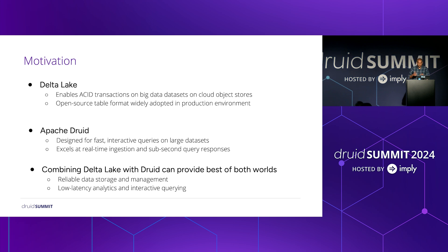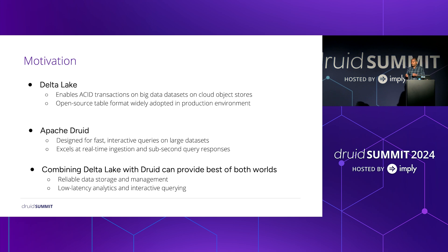Just a brief introduction about Delta Lake. Delta Lake is a table format. It enables ACID transactions on large datasets that are in cloud object stores. Before Delta Lake, datasets in object stores used to be like a directory with a set of Parquet files underneath. If you want to read the table, you just list the directory contents and figure out what files are there.